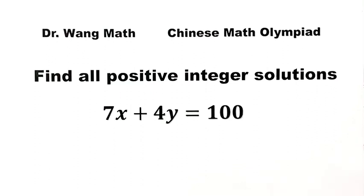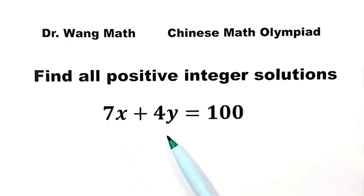In this video, we're going to solve a problem from the Chinese Math Olympiad. The question is: find all positive integer solutions of the equation 7x plus 4y equals 100. Now let's see how to solve it.